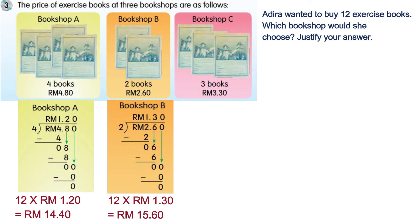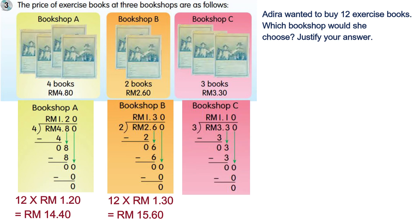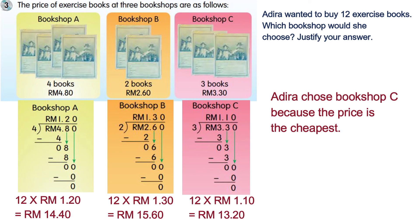For Bookshop C, the price of three books is three ringgit thirty cents. Three ringgit thirty cents divided by three means the price of one book is one ringgit ten cents. One ringgit ten cents multiplied by twelve — the price of twelve books is thirteen ringgit twenty cents. Comparing all prices, Adira should choose Bookshop C because the price of books there is the cheapest.